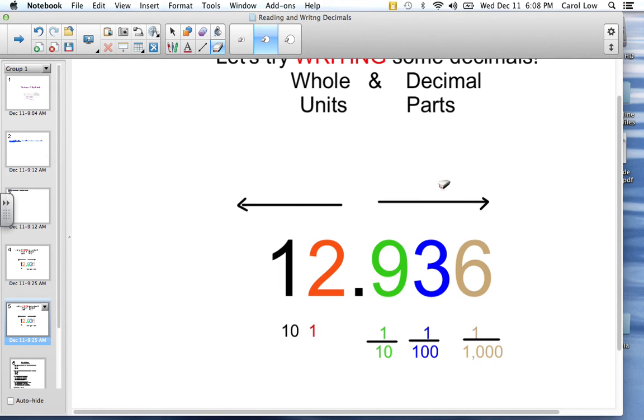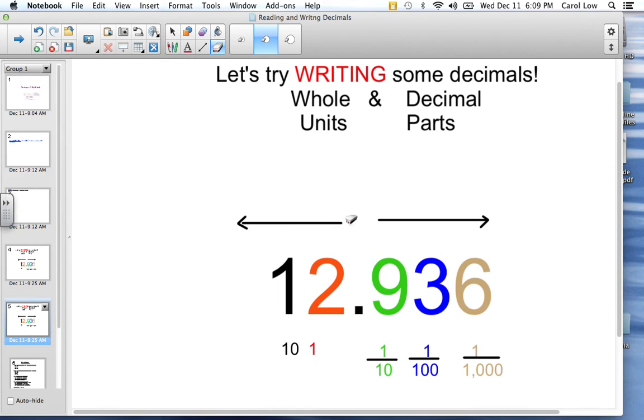Let's do one more. Eight and seven hundredths. This is going to be kind of a tricky one. Eight and seven hundredths. I'm going to put it right above the hundredths column. So eight and seven hundredths.